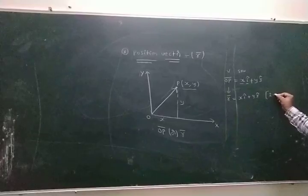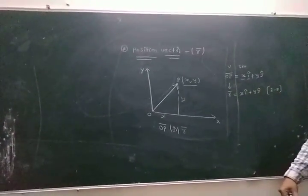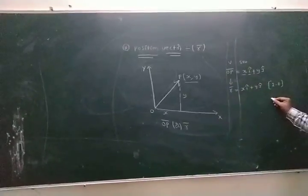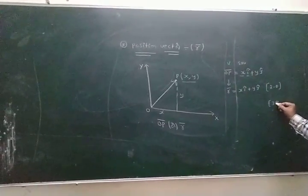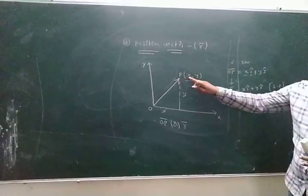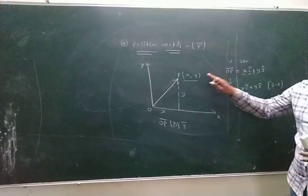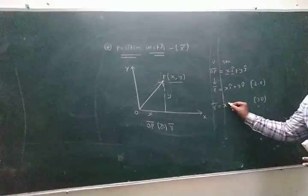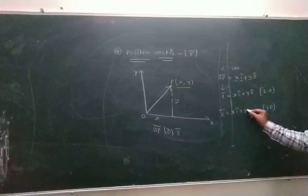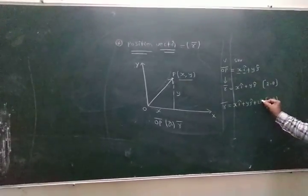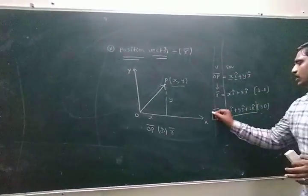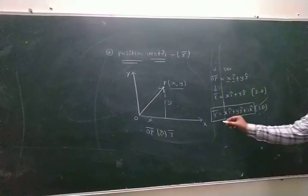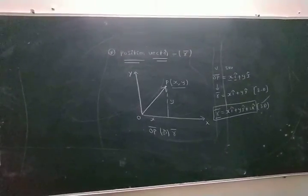This formula R̄ = Xî + Yĵ is applicable in two dimensions — rectangle, square, circle situations. If the motion is 3D, point P has coordinates (X, Y, Z). In that case, the position vector is written as R̄ = Xî + Yĵ + Zk̂. This is the formula for position vector in 3D.